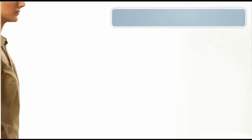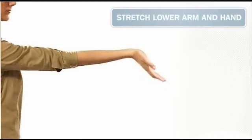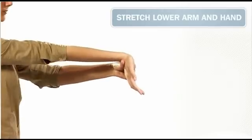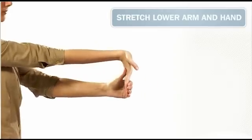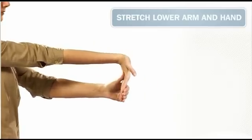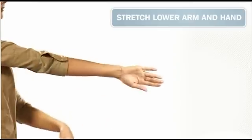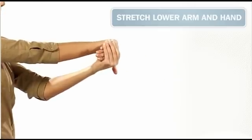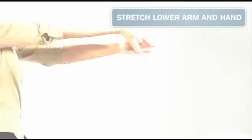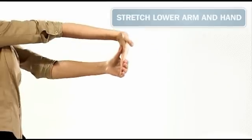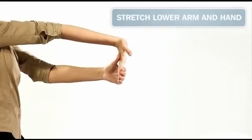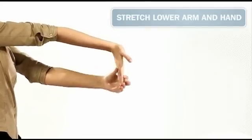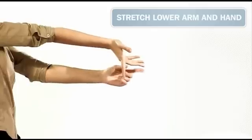In order to stretch your lower arm, you hold your arm outstretched with your palm facing upwards. Stretch your hand down, then stretch the fingers down. Now you turn your arm round and stretch your hand outwards. You can stretch your hand muscles in various ways: stretch your fingers at the same time, and then stretch each finger separately.